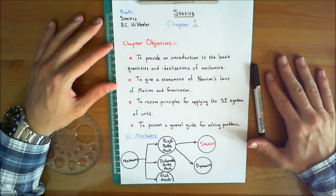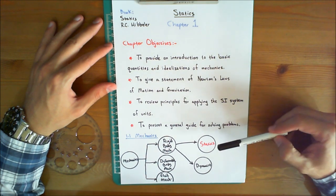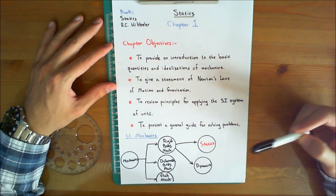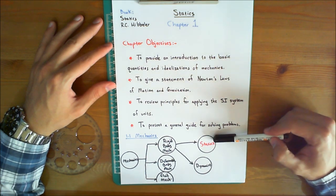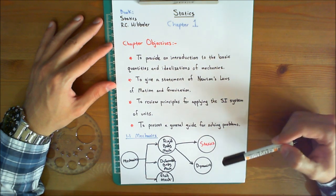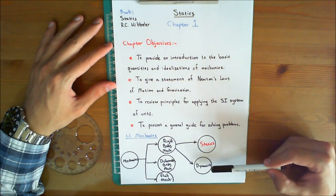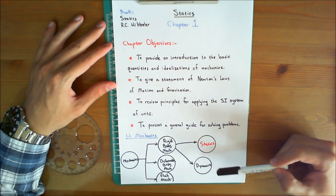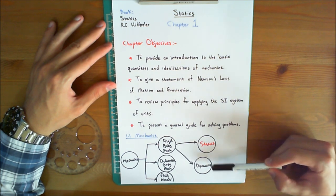So there are two key words that you must remember. The first key word whenever you hear the word statics is equilibrium. Statics always deals with the equilibrium of bodies. As a matter of fact, the entire subject of statics is based on Newton's laws of motion, which we will cover soon. And whenever you hear the word dynamics, you must remember accelerated motion. Those two key words: accelerated motion of bodies.